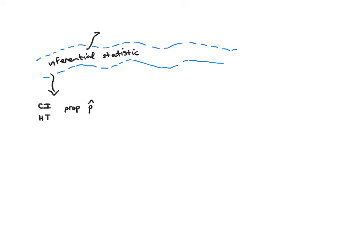We went on and said now we're going to do two proportions. We only did a hypothesis test in this case for two proportions, so it's p-1-hat minus p-2-hat, and we have a test statistic for that as well with its associated standard deviation. The formulas are a little bit different, but everything else is basically the same. We have our standard normal test statistic — it's a z-score, essentially.